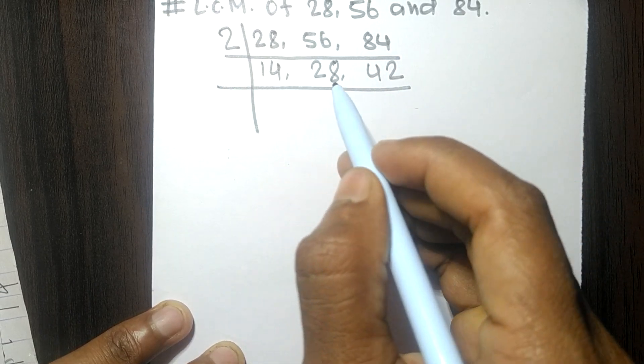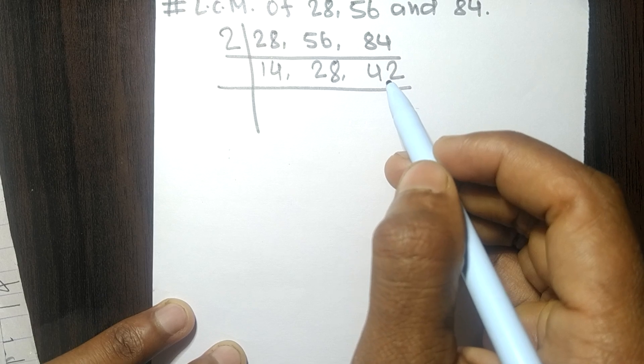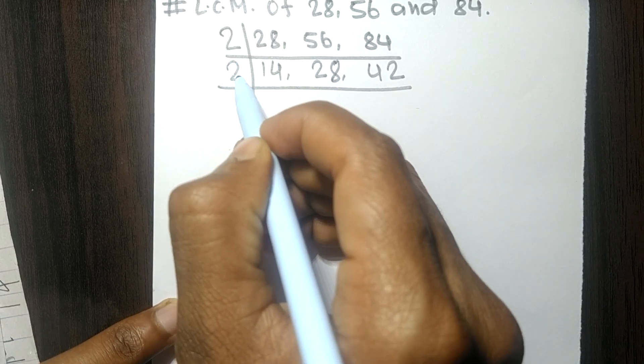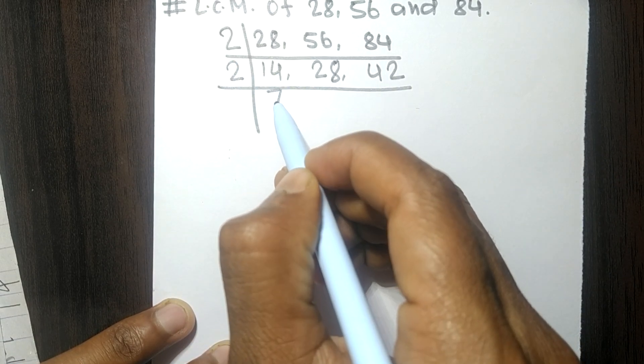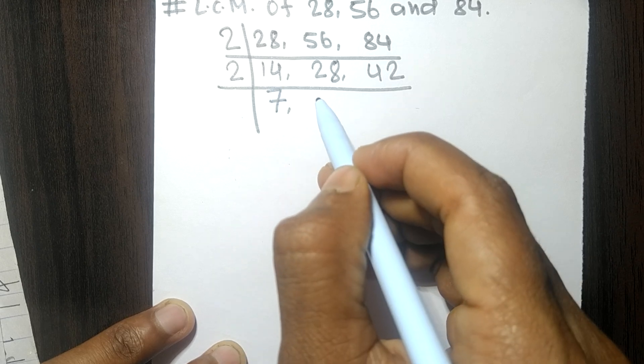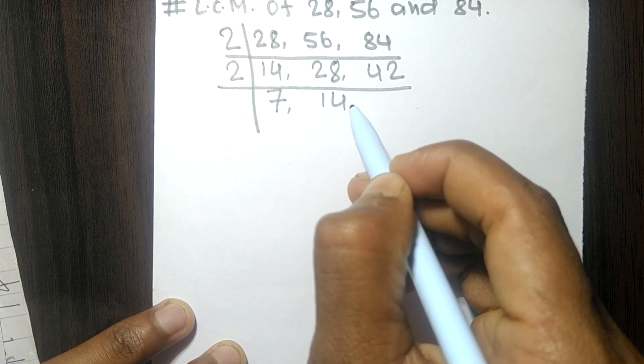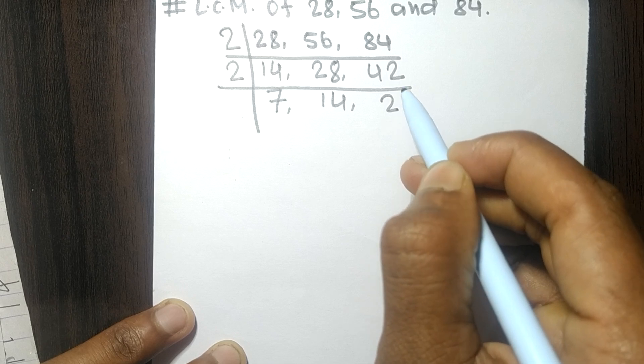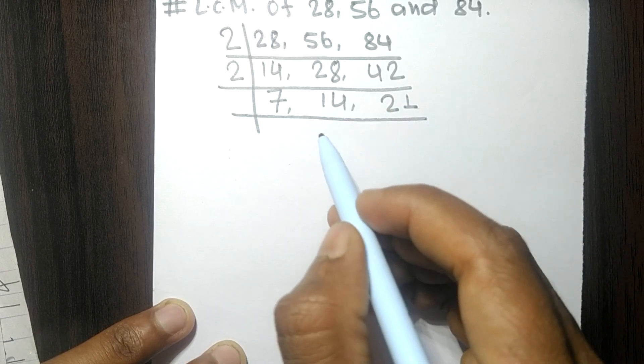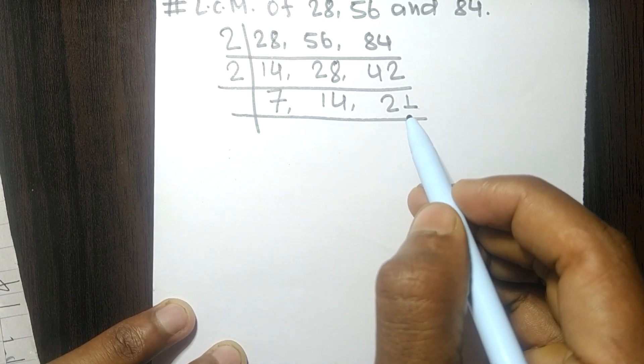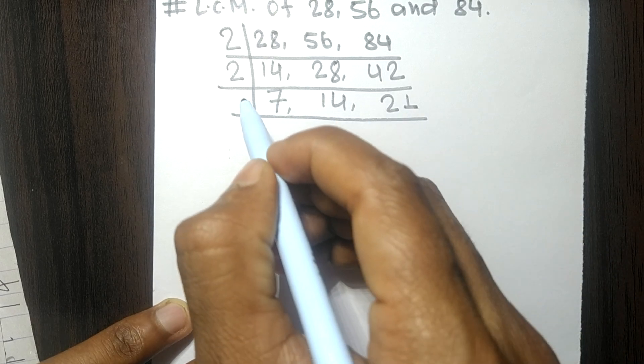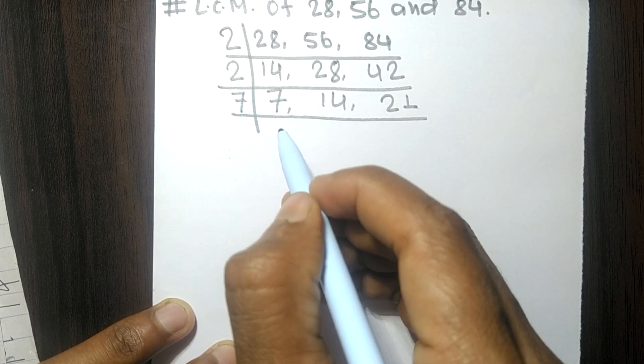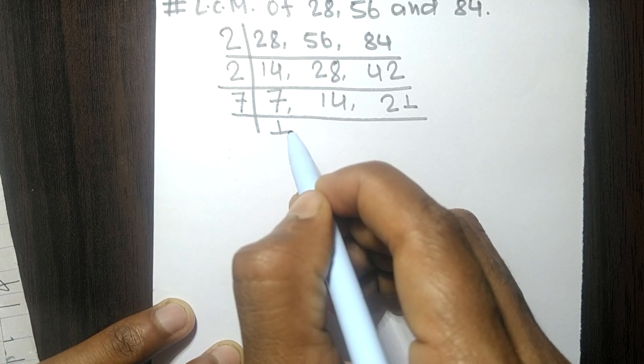Again, these all numbers are exactly divisible by 2, so 2 times 7 means 14, 2 times 14 means 28, 2 times 21 means 42. Now these all numbers are exactly divisible by 7, so 7 times 1 means 7, 7 times 2 means 14, 7 times 3 means 21.